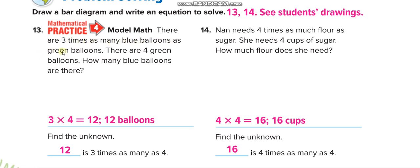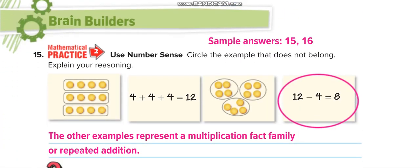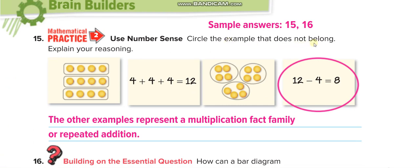This example is simple: there are three times as many blue balloons as green balloons, and there are four green balloons, so three times four equals twelve. Next: Nina needs four times as much flour as sugar. She needs four cups of sugar, so four times four equals sixteen cups of flour.